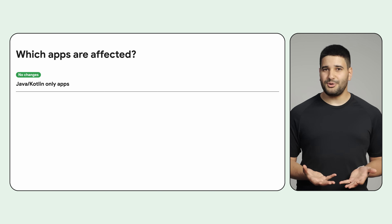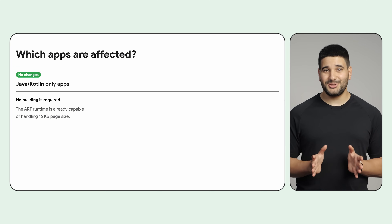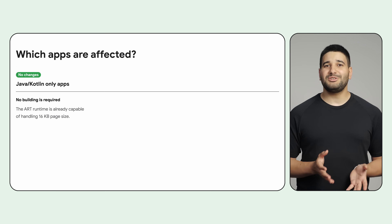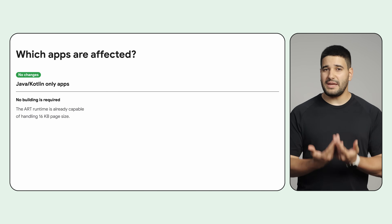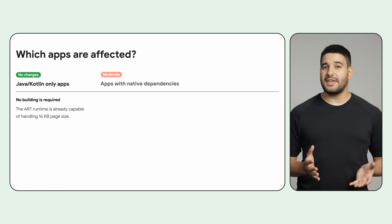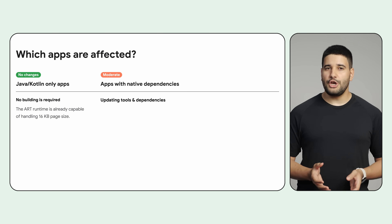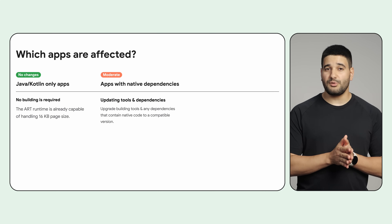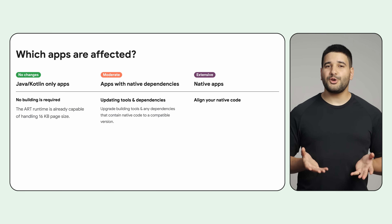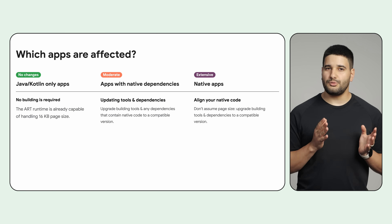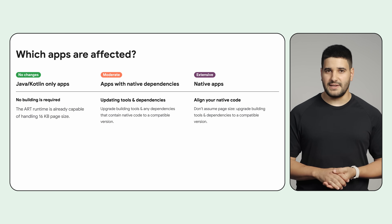If your app is purely written in Java or Kotlin, you're already good to go. The Android runtime has been updated to handle the new page size for you. In the case you have native dependencies, you'll have to upgrade to compatible versions. And for native apps, the codebase will have to be updated to remove any assumption of the page size.